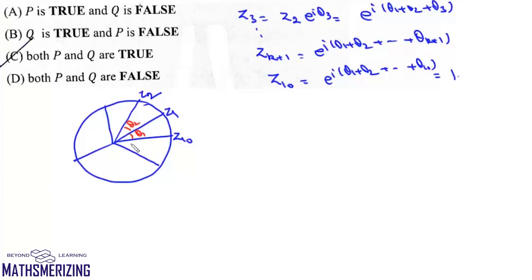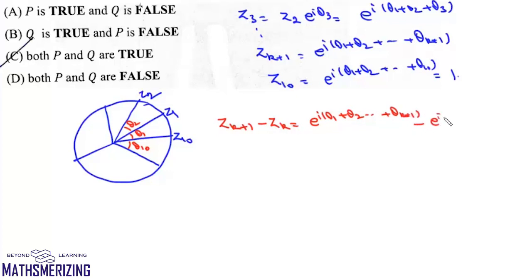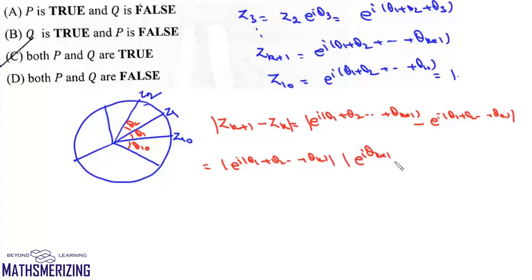Now, z_{k+1} - z_k = e^(i(θ1+θ2+...+θ_k)) · (e^(iθ_{k+1}) - 1). Taking the modulus, we can write |z_{k+1} - z_k| = |e^(i(θ1+...+θ_k))| · |e^(iθ_{k+1}) - 1|. Since the first factor is 1, we get |z_{k+1} - z_k| = |e^(iθ_{k+1}) - 1|, which equals the square root of (cos θ_{k+1} - 1)² + sin²θ_{k+1}.